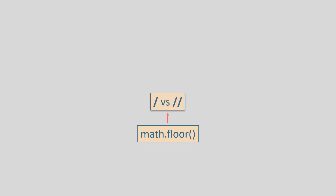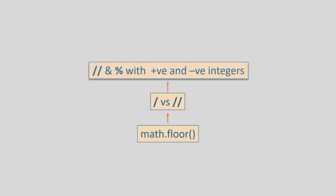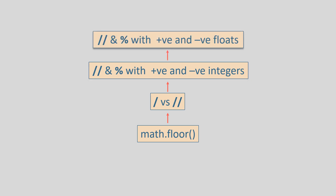For this, first we shall understand the floor method of the math module. Then we shall understand the difference between normal division and floor division. Then we shall understand the floor division and modulo operators for positive and negative integers, and then for positive and negative floating point numbers. This sequence will clear all the doubts and confusions regarding floor division and modulo operators.